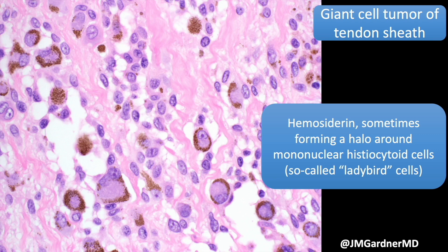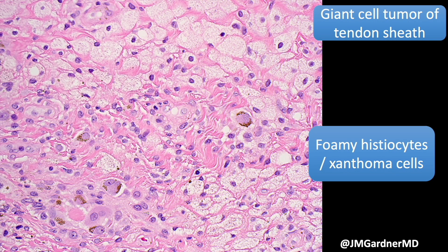Some people have called these 'ladybird cells' — in the United States we call those ladybugs. To me they look like halos of hemosiderin, but other folks have called them ladybird cells or ladybug cells if you're American. Also look for foamy histiocytes, or xanthoma cells — not always present, but oftentimes you'll find them.